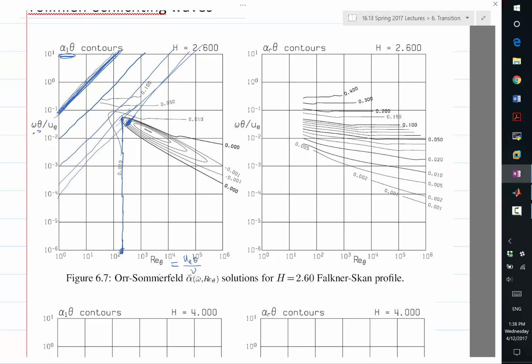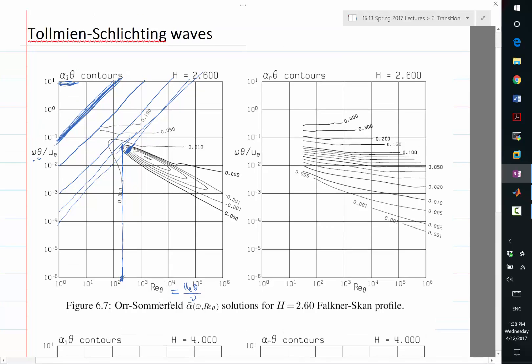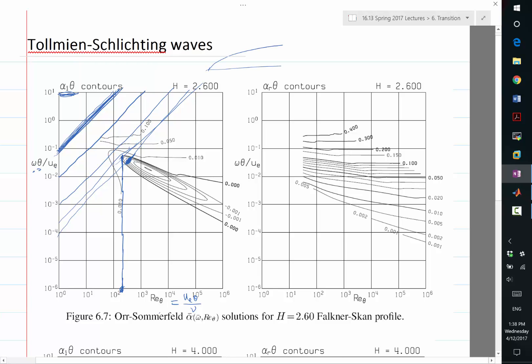If the Reynolds number is lower, then the boundary layer is thicker compared to the stream-wise extent. So with the same amount of alpha-I times theta, you have less alpha-I times delta X. So you have two boundary layers. One boundary layer is like that. X, this is theta. Another boundary layer, higher Reynolds number, it goes like that. So boundary layer 1, boundary layer 2.